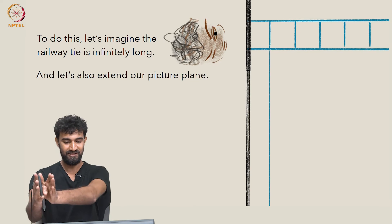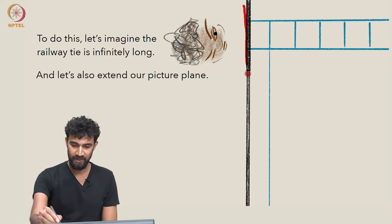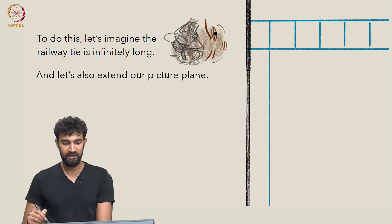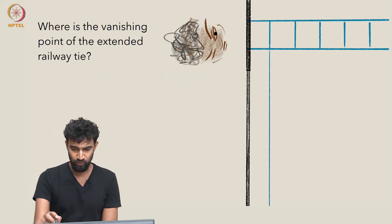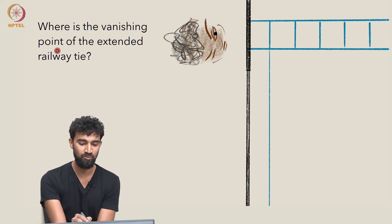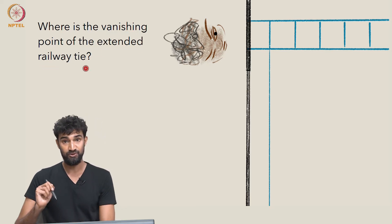So let's extend our picture plane, and let's extend one of the railway ties. And once we've done that, let's ask the question: where is the vanishing point of this extended railway tie?